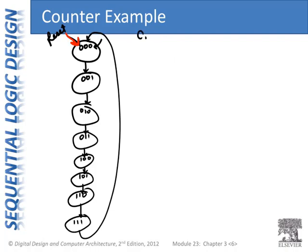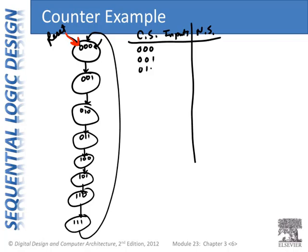Current state, inputs, and next state. We don't have any inputs on this one. I'm going to go directly to the encoded table because it makes sense in this case. The encodings we're going to use are 000 state, 001, 010. We don't have any inputs on our transitions, so we'll just have one row for each state.